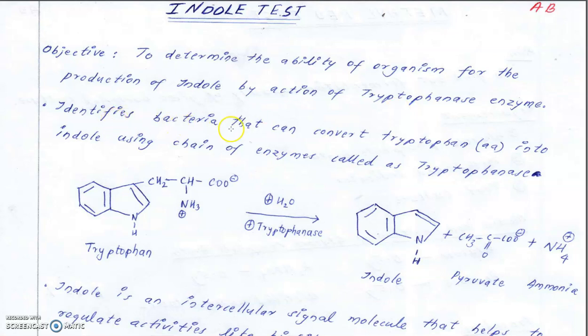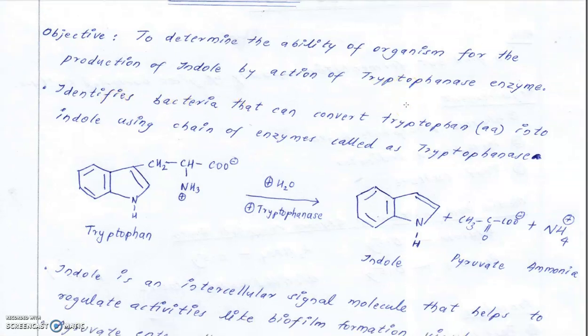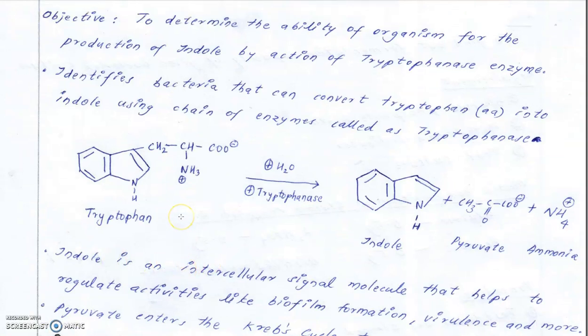We are going to identify bacteria that can convert tryptophan, which is an amino acid, into indole using a group of enzymes called tryptophanases. Tryptophanase is not a single enzyme but a cascade — there is tryptophanase 1, 1a, 1b, 1c, and many more. These tryptophanases hydrolyze tryptophan in the presence of H₂O and produce indole, pyruvate, and ammonia.